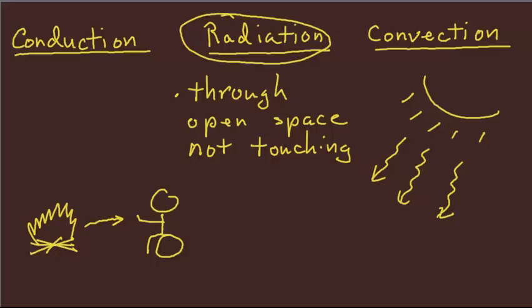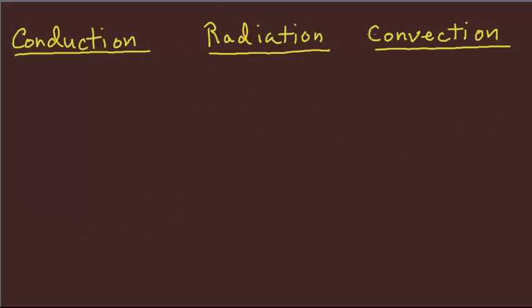And then finally, and I know I'm going kind of fast, but three explanations in one video is kind of quick, is convection. And convection is a little bit more difficult to explain. Convection is a circulation.